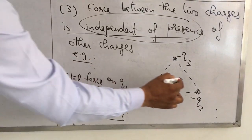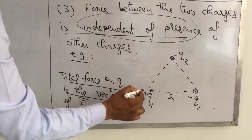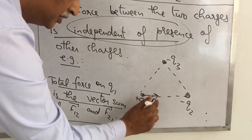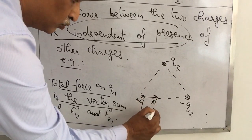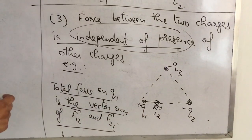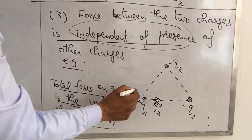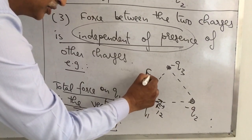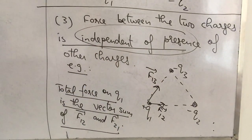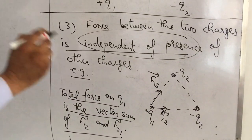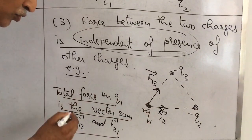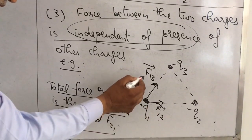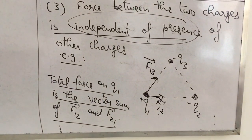The total force on Q1 is the vector sum of these two forces. Because of the negative charge Q2, force on Q1 is F12 (attractive). Because of -Q3, force on Q1 is F13. The total force on charge Q1 is the vector sum of F12 and F13.